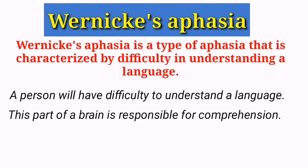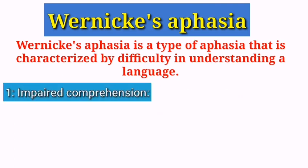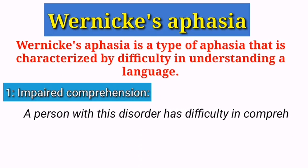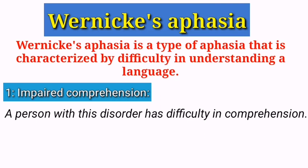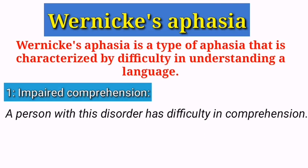To differentiate it from Broca's aphasia, keep in mind these points. The first is impaired comprehension — a person having this language disorder will have difficulty comprehending language, whether written or spoken. This may include difficulty following conversations, understanding jokes, or reading and comprehending text. When Wernicke's area is damaged, the person will struggle to comprehend language.